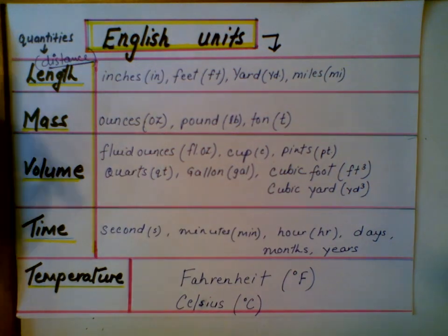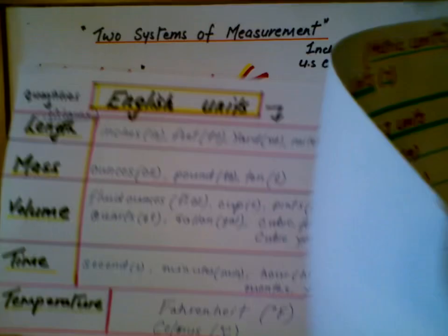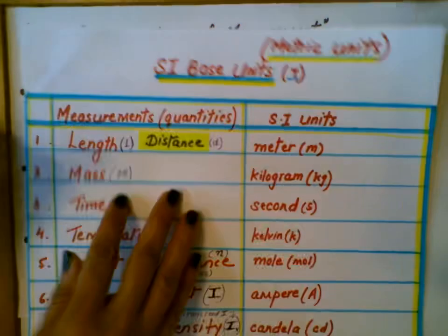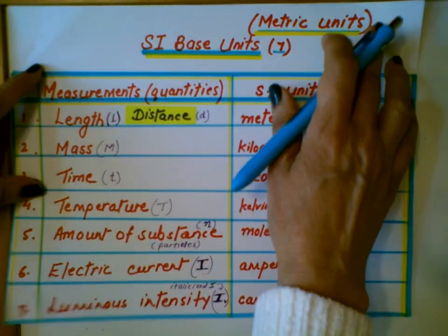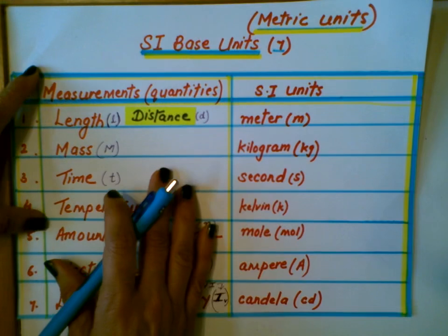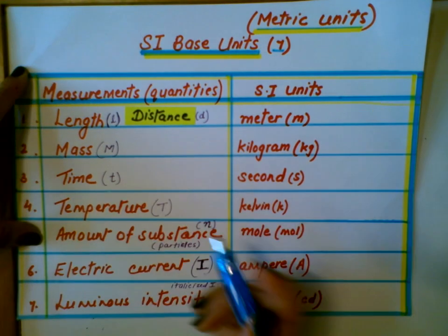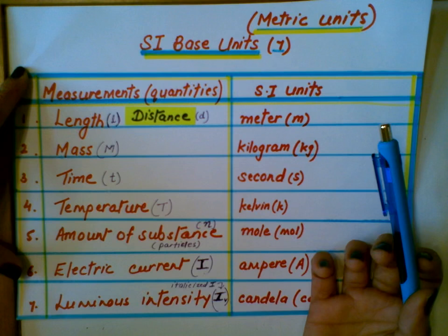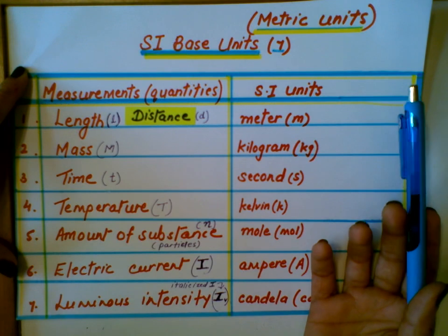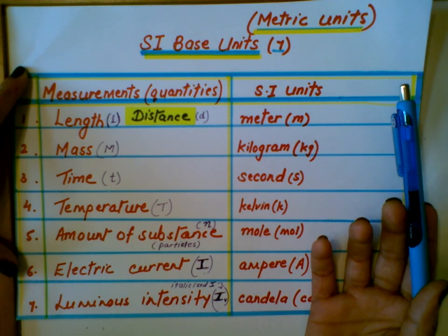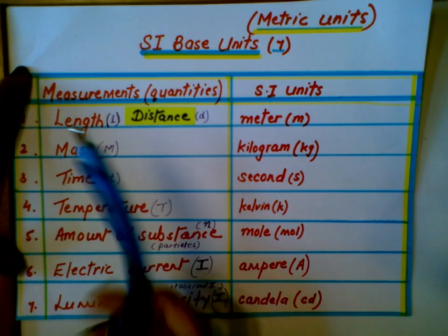In the metric system, for one measurement, there is mainly one SI base unit that you need to remember. That's the beauty of using the metric system. This system provides seven standard base units.